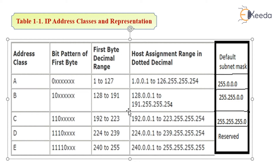Class D has the range from 224 to 239, and these two classes are reserved for future applications, so the default subnet mask is reserved. Class E has the range from 240 to 255.